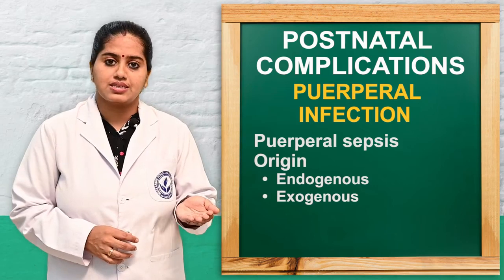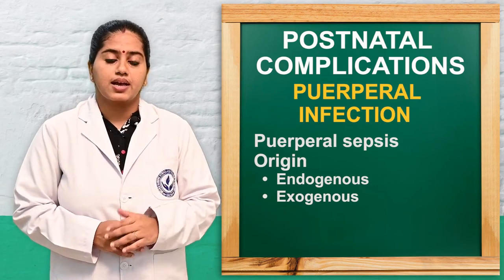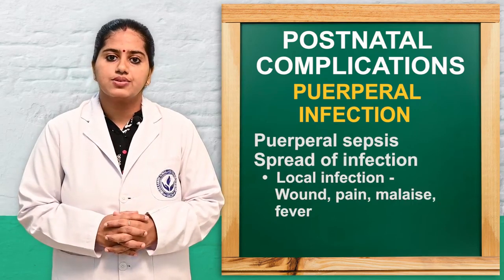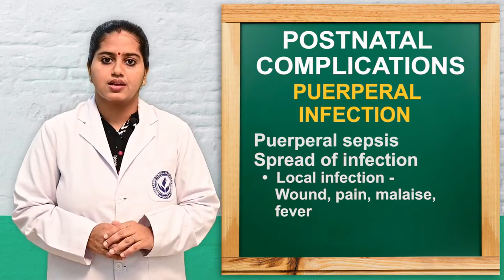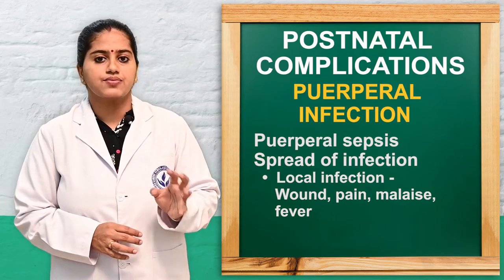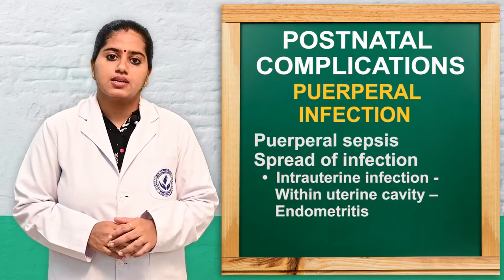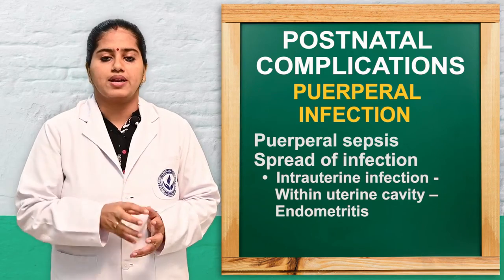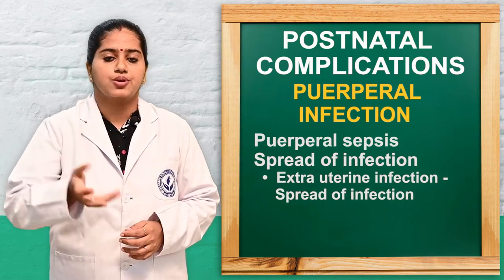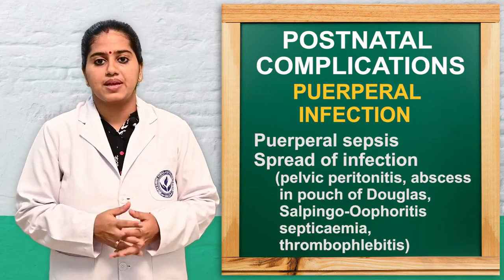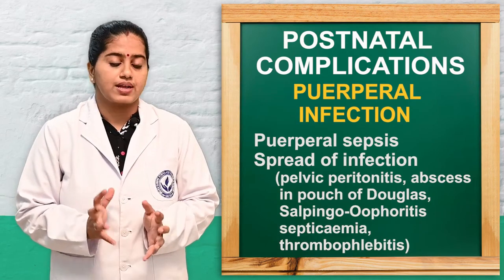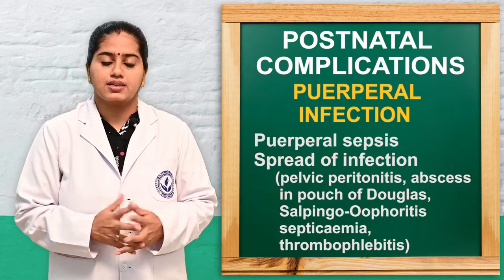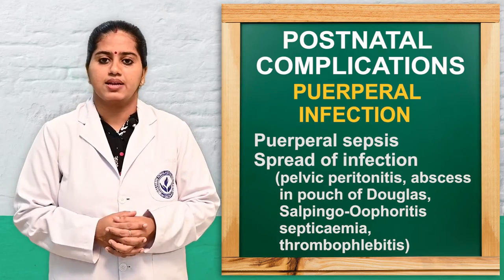The origin can be endogenous — from within the uterus — or exogenous, where organisms enter from outside into the uterine cavity. The spread of infection can be local, causing local wound pain, malaise, fever, and rigors. It can also be intrauterine, localized in the uterine cavity causing endometritis. Extra-uterine spread can cause pelvic peritonitis, pouch of Douglas abscess, salpingo-oophoritis, septicemia, and thrombophlebitis.